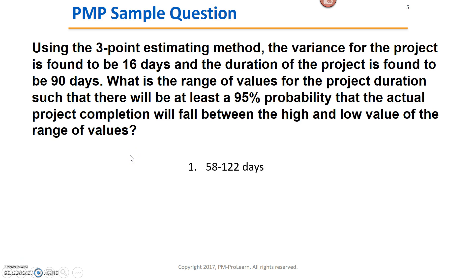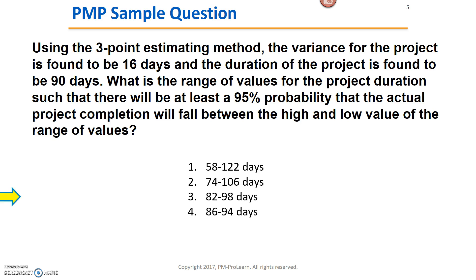Let's look at the answer choices. Is 58 to 122 equal to 90 days plus and minus two standard deviations of 4? No. The answer is 82 to 98 days. If my duration is 90 days and my standard deviation is 4, and I want 95% probability, I take 90 plus 8 and minus 8 — that's two standard deviations — and I get 82 to 98 days. That range gives me the target I can be 95% confident my team will actually complete the work within.